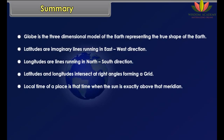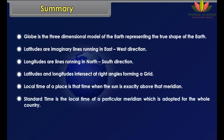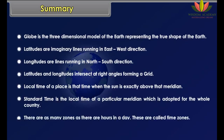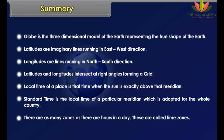Summary. A globe is the three-dimensional model of the earth representing the true shape of the earth. Latitudes are imaginary lines running in an east-west direction. Longitudes are lines running in a north-south direction.